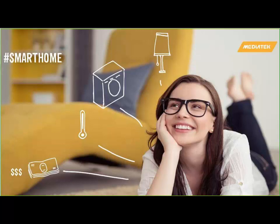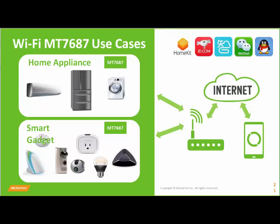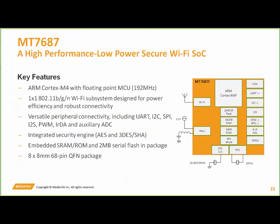In terms of smart home, we have the MT7687. There are a number of different use cases it is most suitable for. Home appliances are a really obvious choice here, as are smart gadgets. It has support for things like Apple HomeKit and JD.com. It's an ARM Cortex M4 with floating point, running at 192 MHz. The PMU is embedded again, and it has a very extensive Wi-Fi system that's been specifically designed to be power efficient. We've always got that idea of doing the most with the least amount of power.